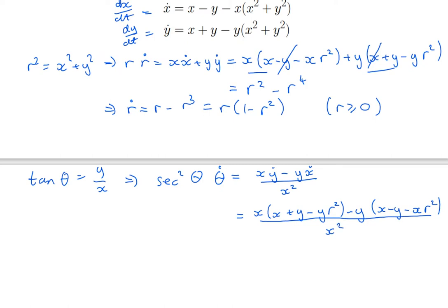Now let's look for some simplifications. I have a plus x y and a minus x y. They cancel. And I have a minus x y r squared and a plus x y r squared. And they cancel, leaving me with x squared plus y squared. Well, that's r squared.